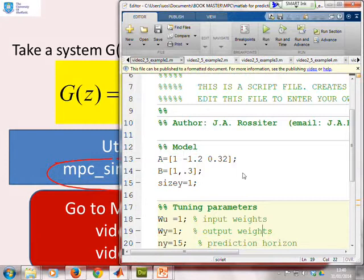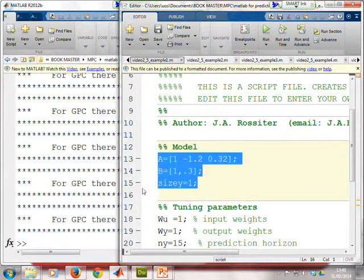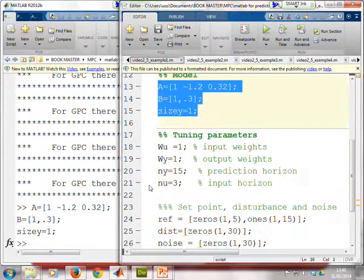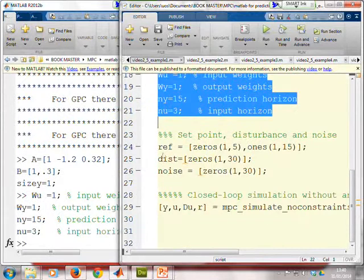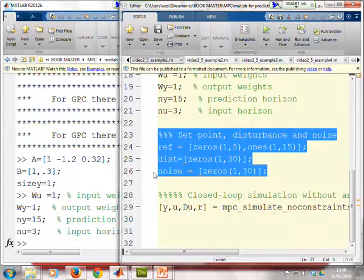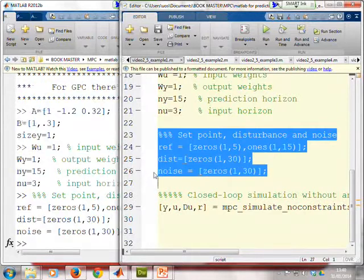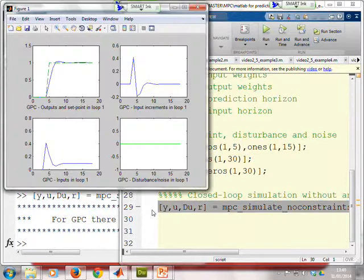So let's go to example one. So let's open our command window just in case we need it. So the first thing, enter a model. Second enter your parameters, there they are. Third define what the set point disturbance and noise will be for this particular simulation. And then finally, just put it into this mpc_simulate_no_constraints file and run it. And there you have your results.